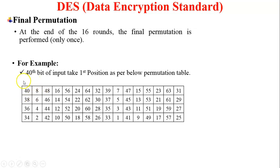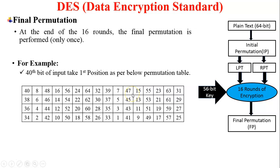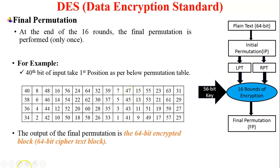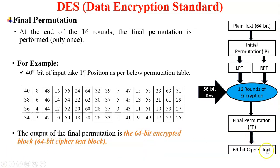The 40th bit is transposed to the first bit position. The output of the final permutation is the 64-bit encrypted block — the 64-bit ciphertext block. The whole process is completed — this is the working of DES.